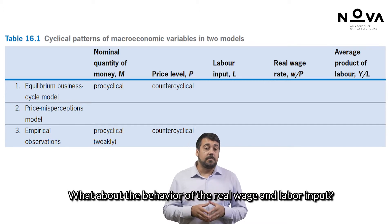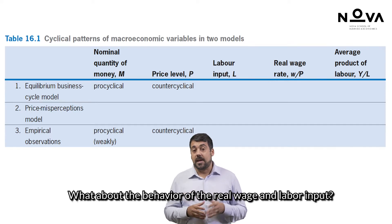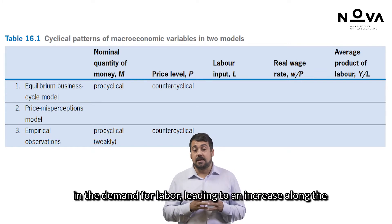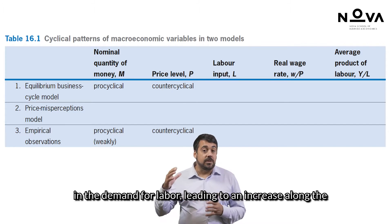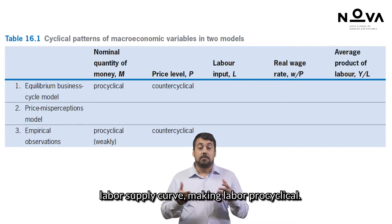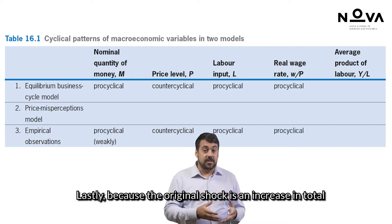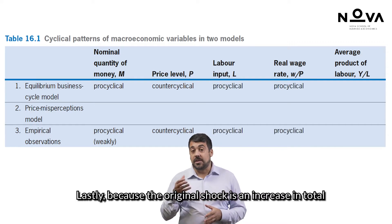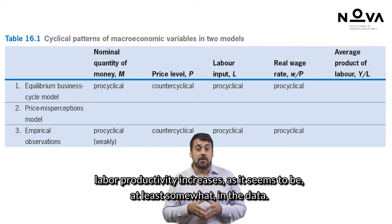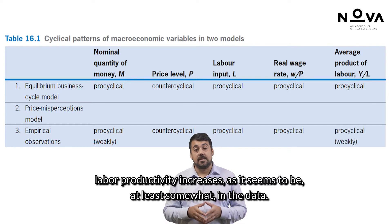What about the behavior of the real wage and labor input? The increase in total factor productivity leads to a shift in the demand for labor, leading to an increase along the labor supply curve, making labor pro-cyclical. Lastly, because the original shock is an increase in total factor productivity, it is easy to conclude that the average labor productivity increases, as it seems to be at least somewhat in the data.